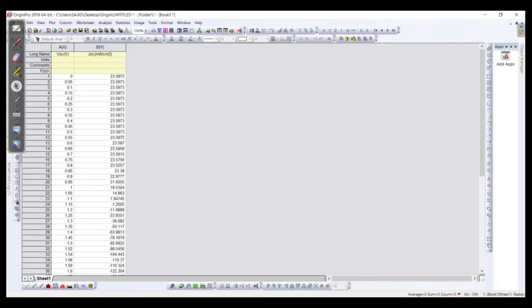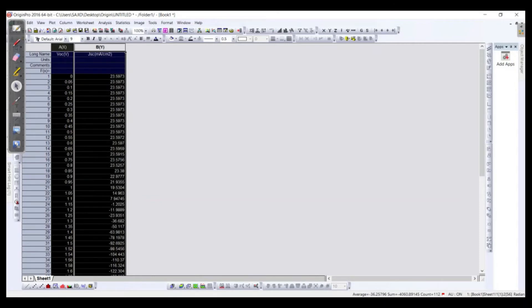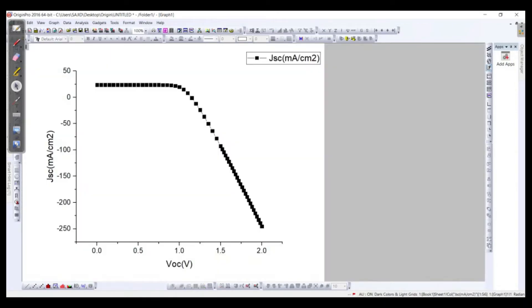So now select these two columns and just draw the graph. So here we can see along x-axis we have the open circuit voltage, along y-axis we have the short circuit current density, and then we can play around and make it more visual.